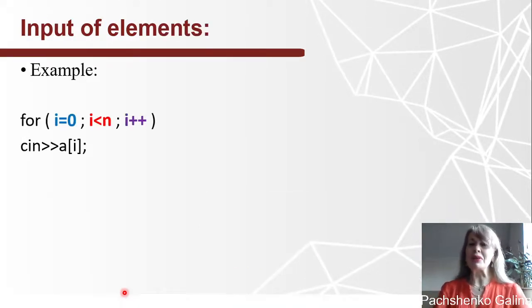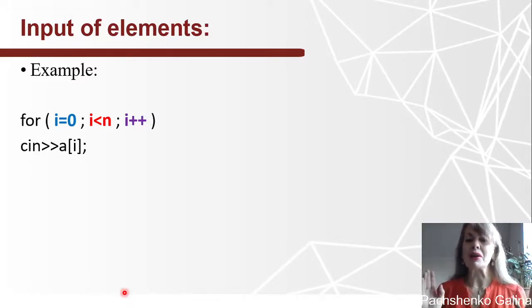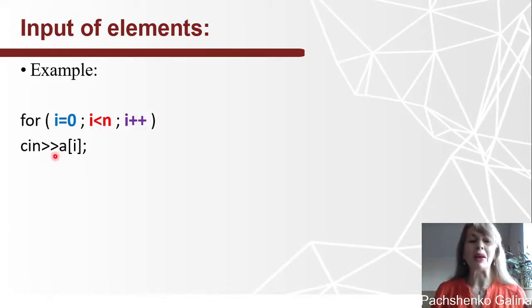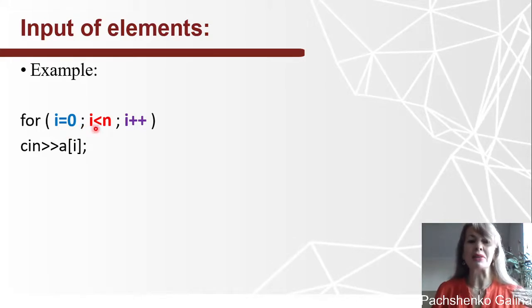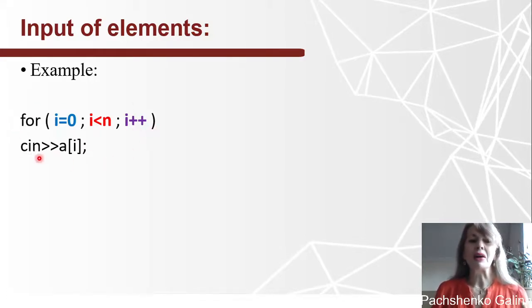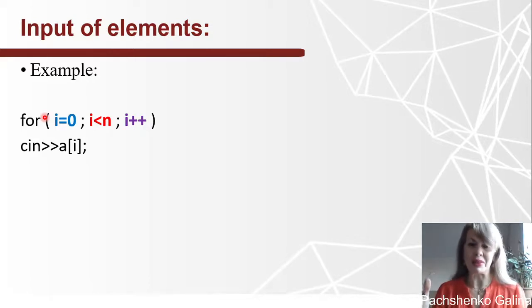Let's talk about input of all elements of a one-dimensional array. You can do this input using a for loop. For example, if we have this array, we write a loop starting from zero, because the first index in the array is zero, then add the condition and the increment. The loop will perform a number of iterations equal to the number of elements in the array.